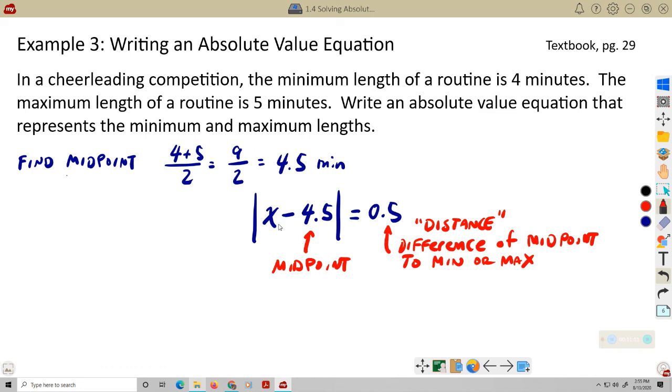So, what does this mean? This means, well, if x, let's say the maximum was 5, 5 minus 4.5 is 0.5. Absolute value, 0.5. If x is the minimum amount, the 4, 4 minus 4.5, that would be negative 0.5. But, the absolute value of negative 0.5 is 0.5. So, again, this is something you kind of have to memorize this form, because to me, it's not very intuitive. It's something that may not make a lot of sense. So, you kind of have to look at the form and memorize it.